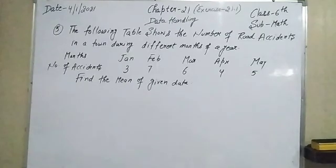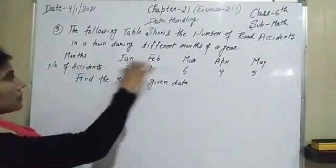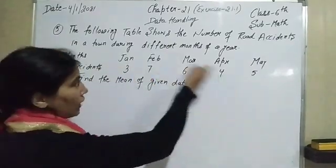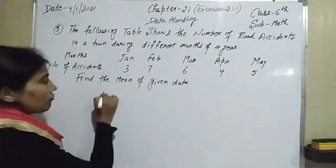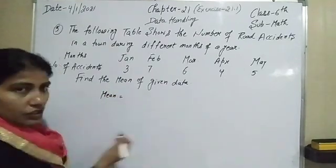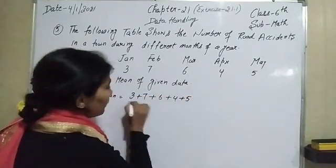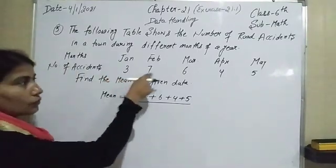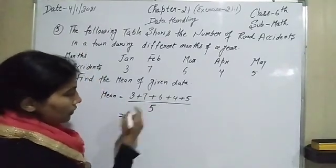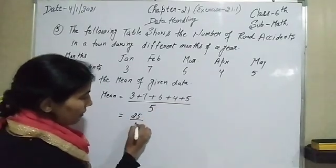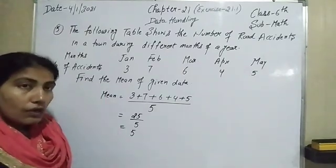The next question: the following table shows the number of road accidents in a town during different months of a year. The months are January, February, March, April, and May, with accidents: 3, 7, 6, 4, 5. Using the formula — sum divided by number of observations — the sum is 3 plus 7 plus 6 plus 4 plus 5, divided by 5 observations. You get 25 divided by 5, so the mean is 5.